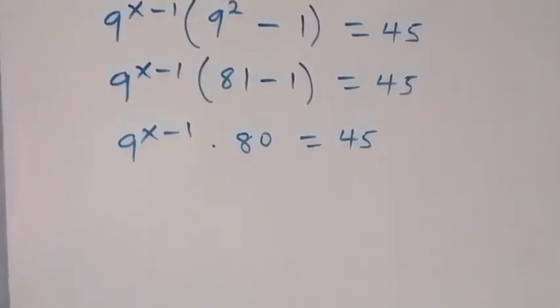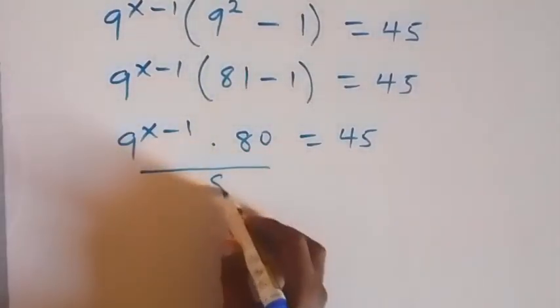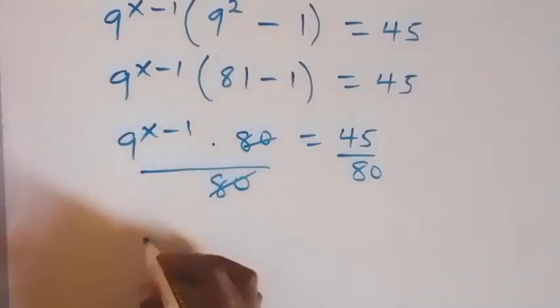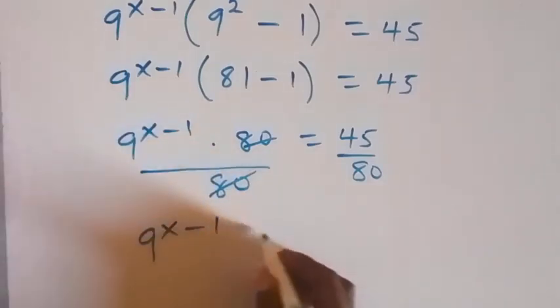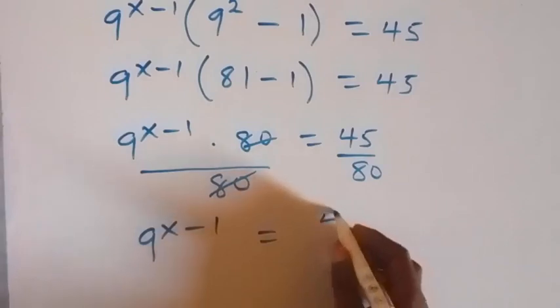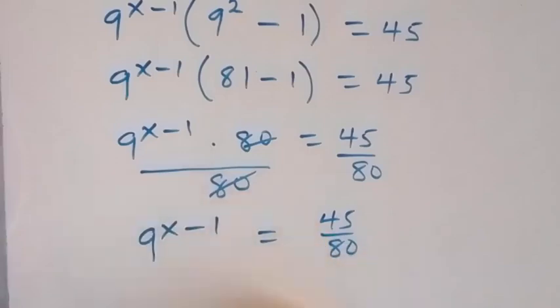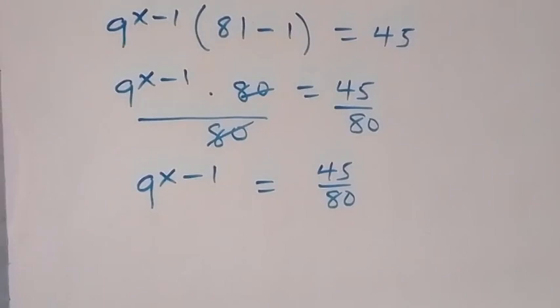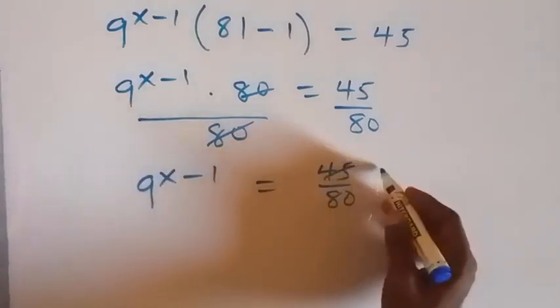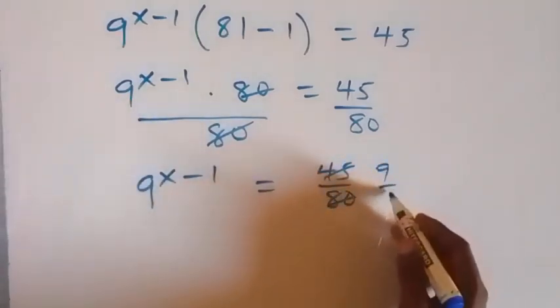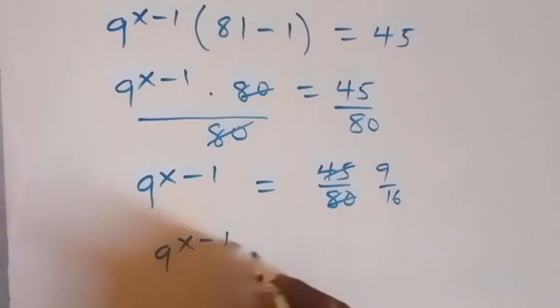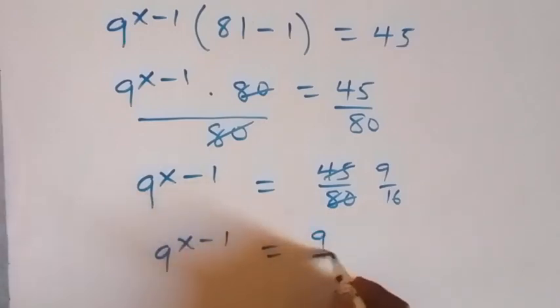And in the next step, we can divide both sides by 80. Then 80 cancel out from here. Remain 9 raised to power x minus 1, which is equal to here. We have 45 over 80. And from here, we can reduce this fraction, and then we divide both sides by 5 from here. And this will reduce to 9. And this will reduce to 16. And from here, we have 9 to power x minus 1 equals to 9 over 16.